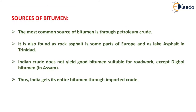Now the sources of bitumen. The most common source of bitumen is through petroleum crude. It is also found as rock asphalt in some parts of Europe and as lake asphalt in Trinidad. Indian crude does not yield good bitumen suitable for roadwork, except Digboi bitumen in Assam. Thus, India gets its entire bitumen through imported crude.